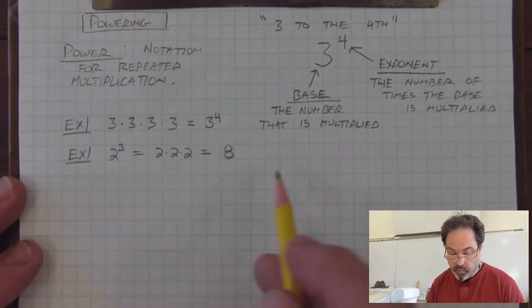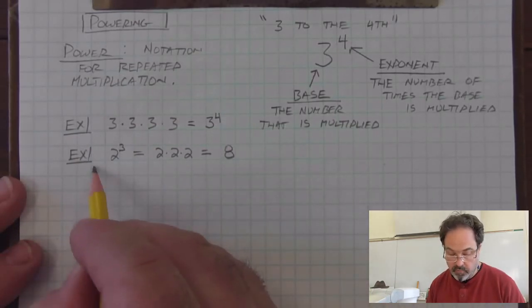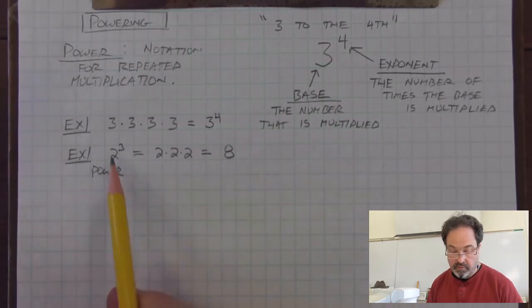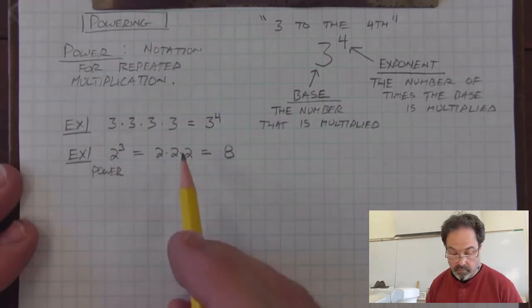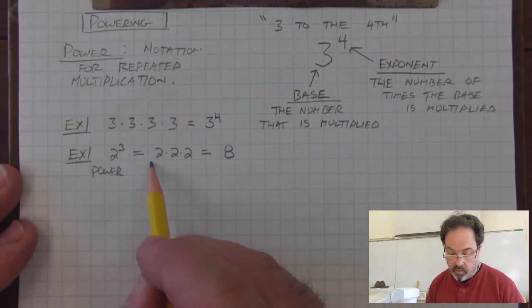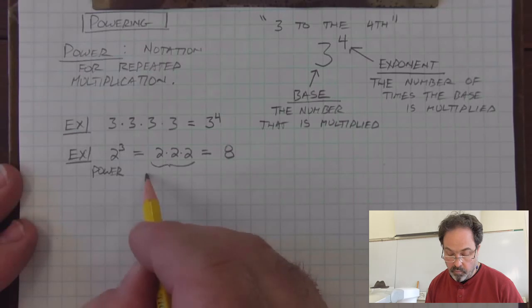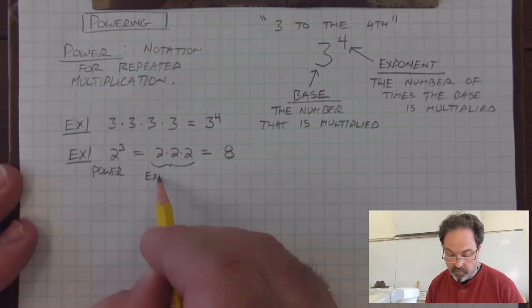When we show it this way, we use the word power to mean the notation 2 to the 3rd or 2 raised to the 3rd. When we show it as the base multiplying itself, we call this the expansion of the power.